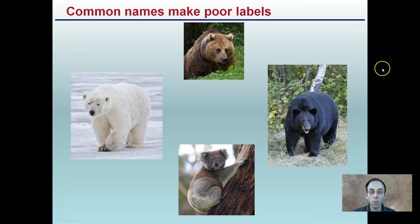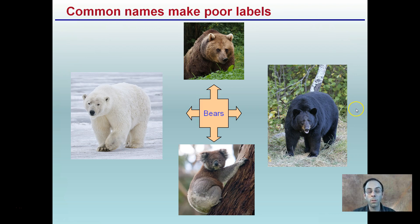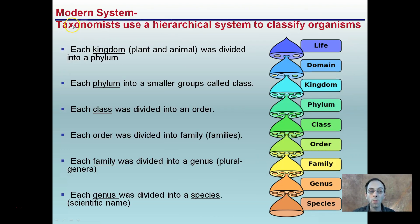Common names make poor labels. For example, grizzly bear, polar bear, koala bear, and black bear are all called 'bears,' but they're not all equally related. We want to be specific with our names so that we know exactly what we're talking about when conveying information to others.